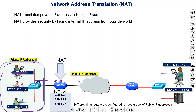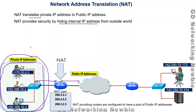In addition to conserving IP addresses, NAT also provides a security advantage by hiding internal IP addresses. When using network address translation, the IP addresses used within the organization are not visible to the rest of the world, which helps protect the internal network.